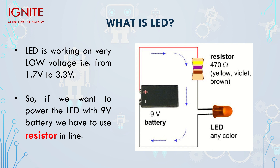The batteries we commonly use — like the small battery in a remote — is 1.5 volts, and the 9-volt battery is what we generally use in robotics projects. The big 9-volt battery shown here in this circuit — we don't have a battery specifically at 1.7 to 3.3 volts, so we cannot directly connect this 9-volt battery to an LED.